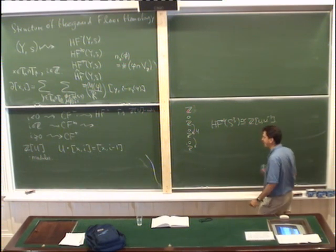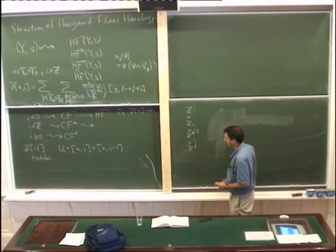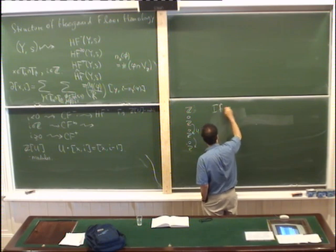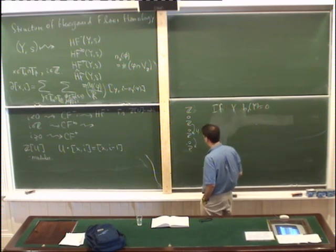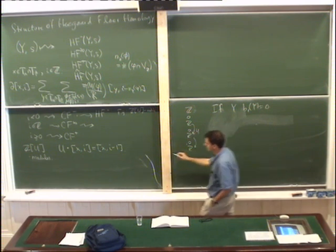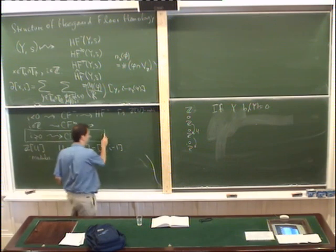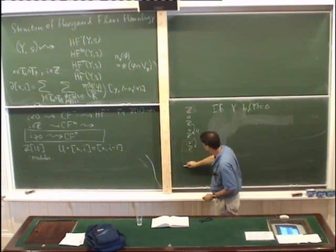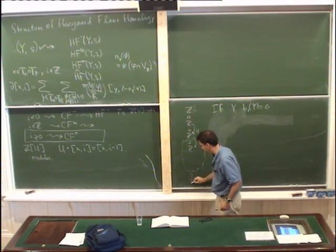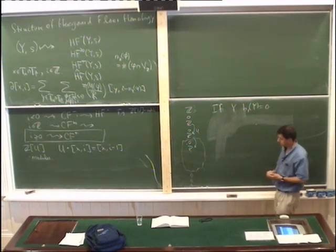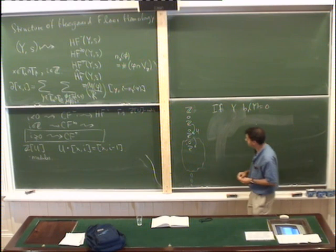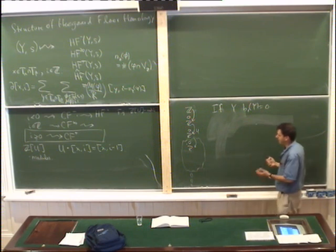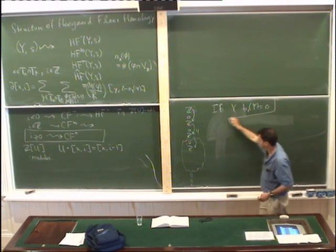Let me make this a little more concrete. In general, for Y with first Betti number equal to zero, the structure of HF plus — and I'll mainly talk about HF plus — is that there's a long tail of Z's and zeros going up to infinity, then some group in the middle, and then zeros. This is the general structure of HF plus for a homology 3-sphere. We haven't proved this yet, but this is the structure, and I'd like to use it.